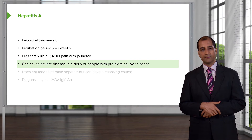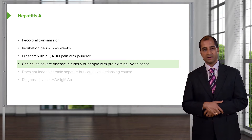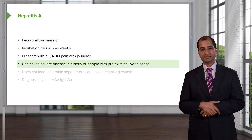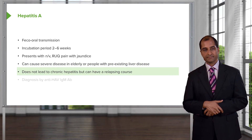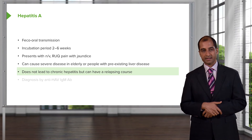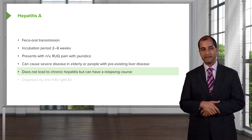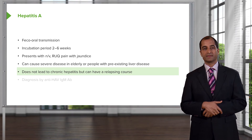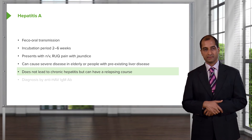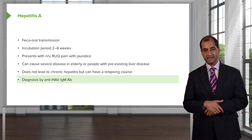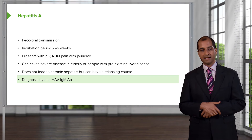In viral hepatitis, ALT will be more elevated. Hepatitis A can cause severe disease in elderly patients or those with pre-existing liver disease. It does not — I repeat — does not lead to chronic hepatitis, but can have a relapsing course. Think of hepatitis A as acute, not chronic. It is diagnosed by anti-HAV IgM antibody.